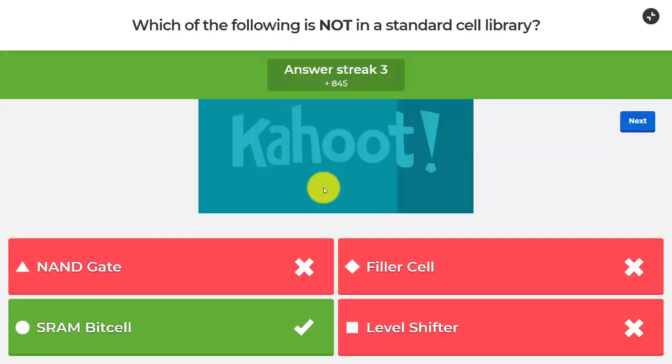So we saw that I was correct. NAND gates, filler cells, and level shifters are in the standard cell library. SRAM bit cells, however, that's something that we're going to get from an SRAM compiler provided by the vendor. It's not part of the standard cell library.